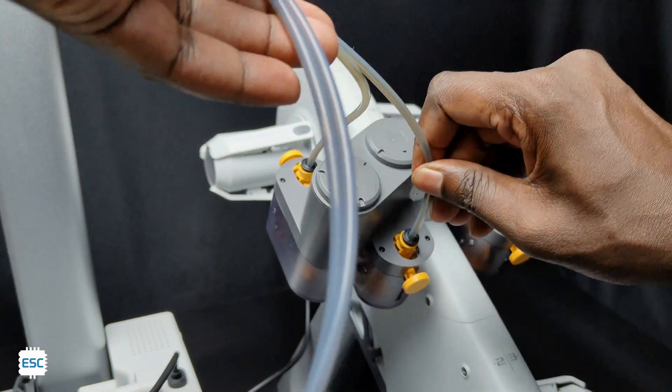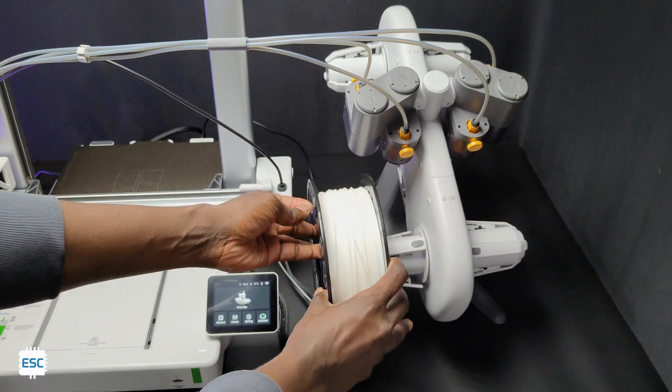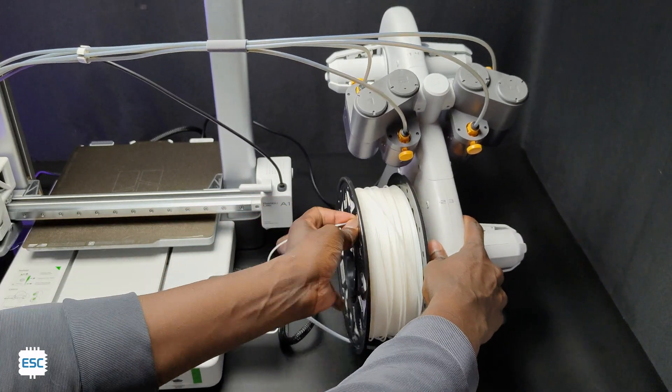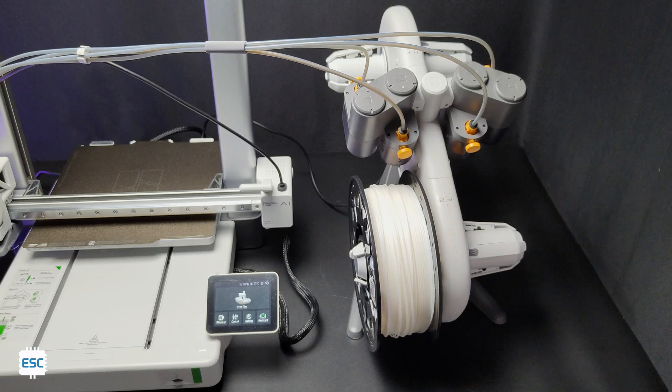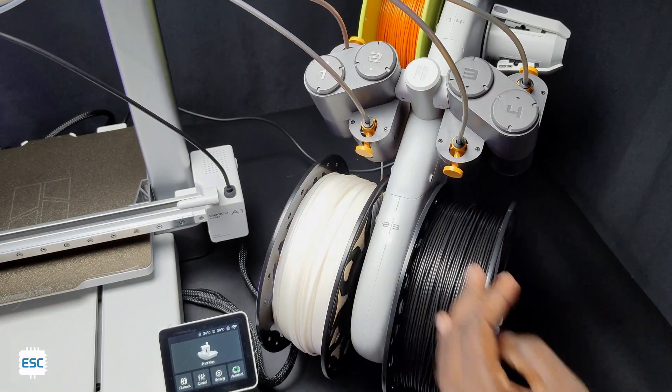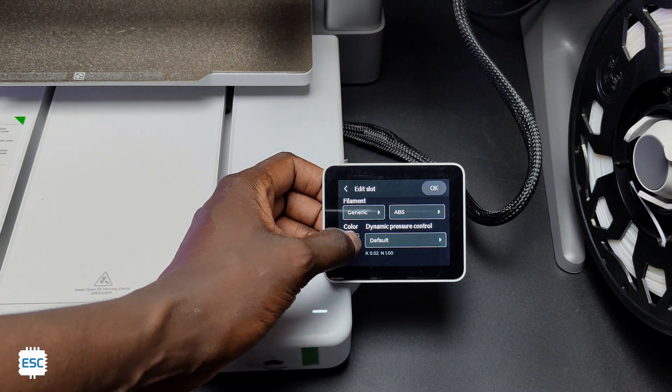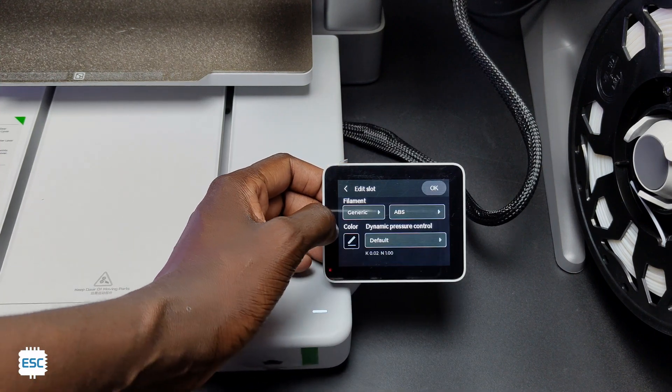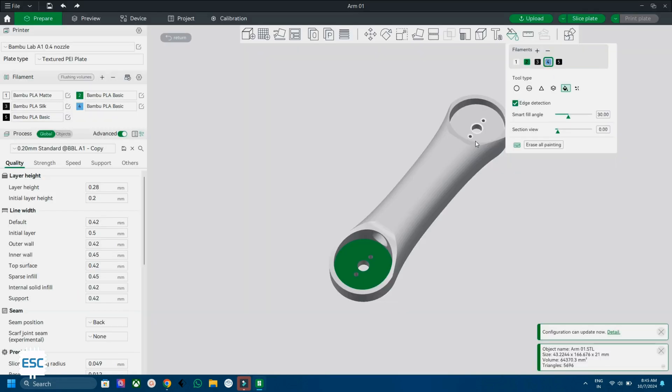Now let's try the multicolor printing. For that connect the four bowden tubes to the AMS and load the filament. The AMS comes with RFID so if you are using Bambu Lab filament the AMS automatically detects the filament and sets the filament settings. For generic filament we can set it manually using the display or studio. You can download the colored models from Maker World or you can color the model using Bambu Lab Studio. Then we can print.